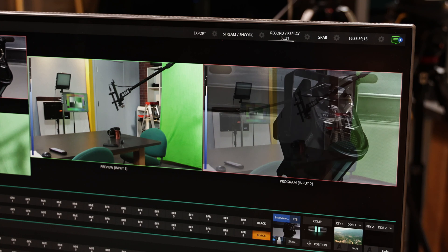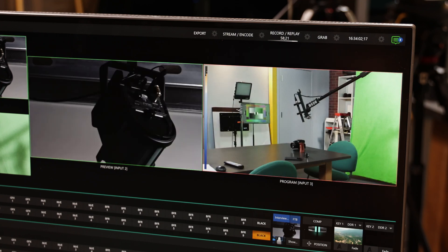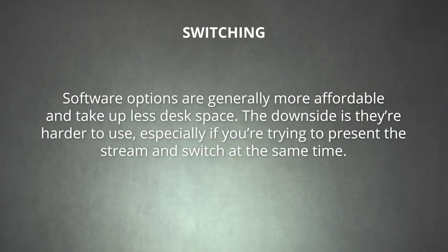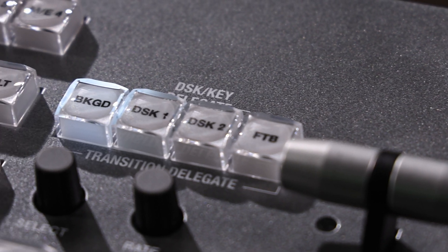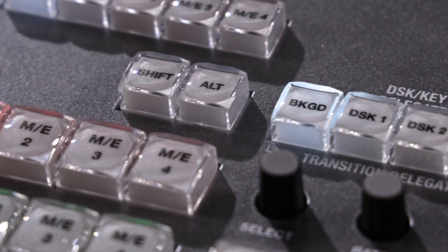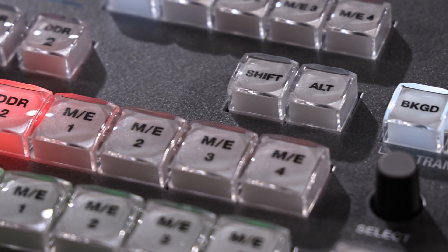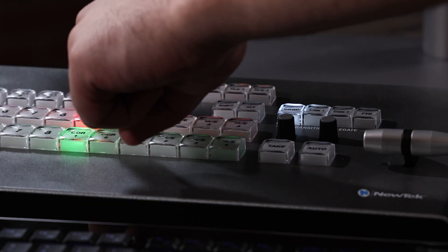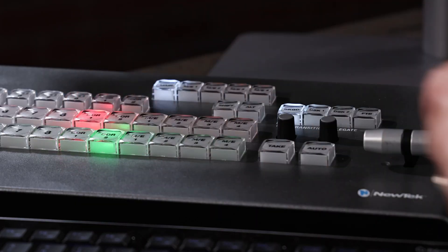If you plan to switch between more than one audio or video input during your stream, you'll need a switcher. Like streaming encoders, switchers come in both software and hardware versions. Software options are generally more affordable and take up less desk space, but they're harder to use, especially if you're trying to present the stream and switch at the same time. On the other hand, hardware switchers offer more complex control and make it easier to manage complex multimedia streams. If you'd like a more tactile experience or want to feel like a professional tech director, a hardware switcher is the way to go.